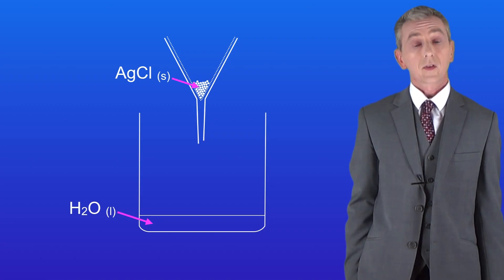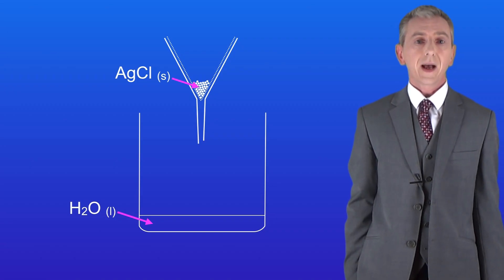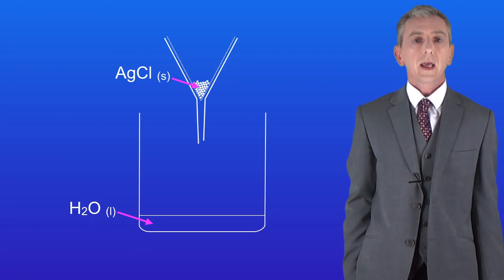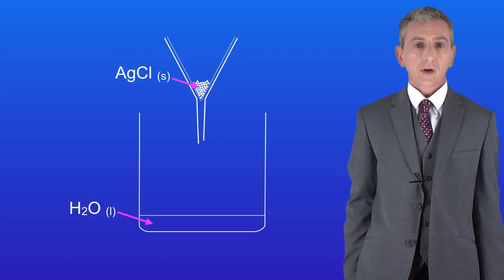However the solid material, in this case the silver chloride, can't pass through the filter paper so it's trapped. So in the end we've got our liquid separated from our solid.